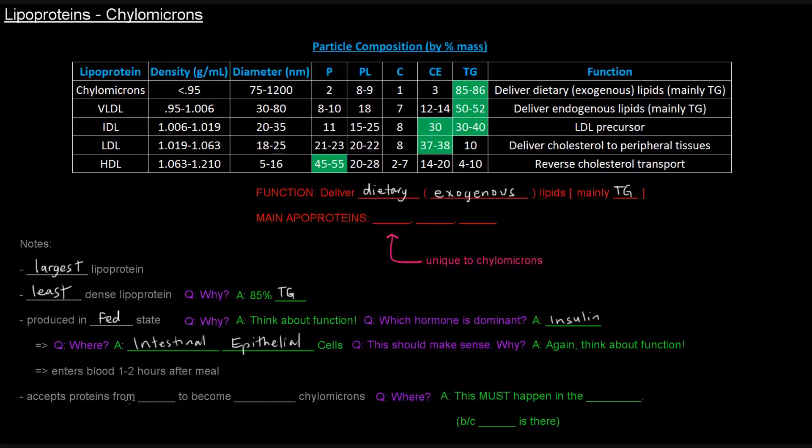Another thing is that it accepts proteins from HDL to become mature chylomicrons. So there are these things called nascent chylomicrons which can eventually become mature chylomicrons. Where does this actually happen? This happens in the blood. This must happen in the blood because that's where HDL is.